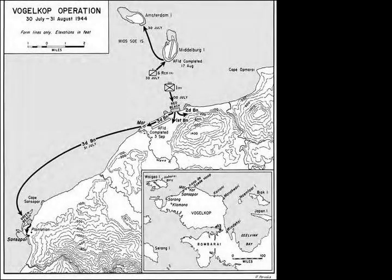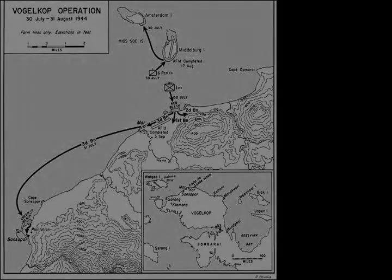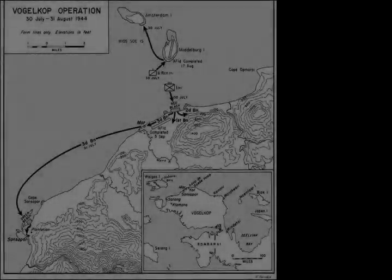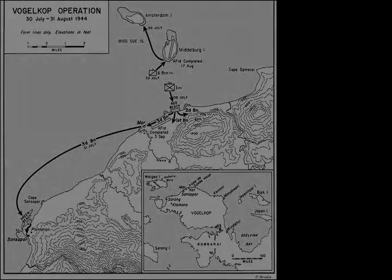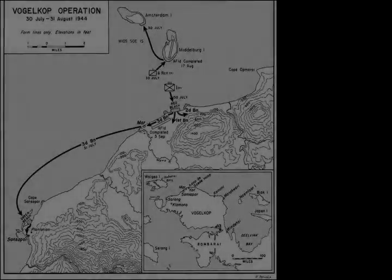Chapter 3 – Base Development. Airfields were built at Mar, Middleburg Island, Cape Opmeri, and a flying boat base at Amsterdam Island. A radar station was also set up at Cape Opmeri. Cape Opmeri Airfield is now a disused airfield.